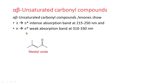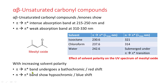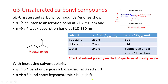Alpha-beta unsaturated carbonyl compounds show a pi-to-pi-star intense absorption band in the range 215–250 nm, and an n-to-pi-star weak absorption band in the range 310–330 nm. This table shows the effect of solvent polarity on the UV spectrum of mesityl oxide. With increasing solvent polarity from isooctane to water, the pi-to-pi-star transition lambda-max goes to a higher value — bathochromic shift — whereas lambda-max for the n-to-pi-star transition shows a lower value, indicating hypsochromic shift.